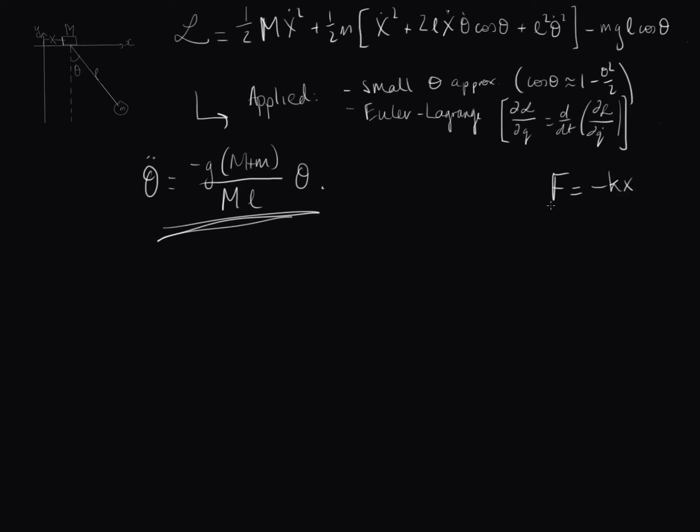So remember that F is equal to mA, but A is equal to x double dot. So that's mx double dot. So we have mx double dot is equal to negative kx, or x double dot is equal to negative k over m times x.